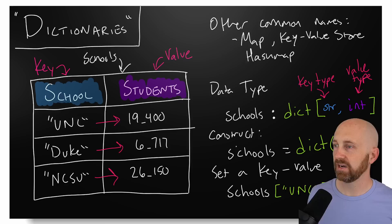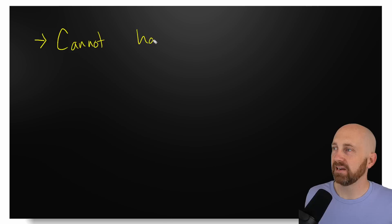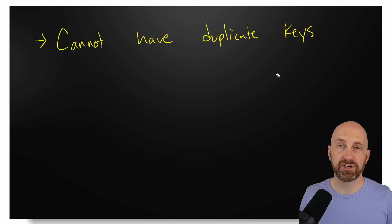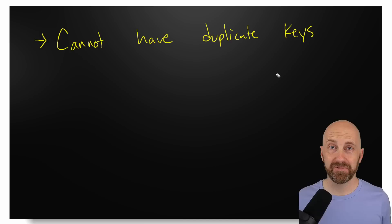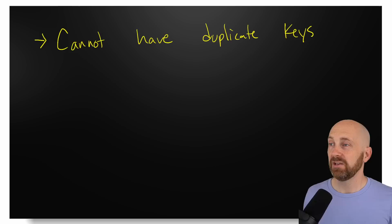Let's note some important things about dictionaries and keys. You cannot have duplicate keys — the keys in a dictionary form a set, meaning you can only have one of that item. You can only have one key 'unc' in a given dictionary. For a single dictionary object on the heap, one key maps to exactly one value.